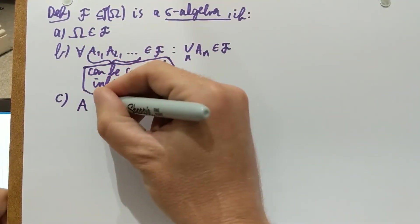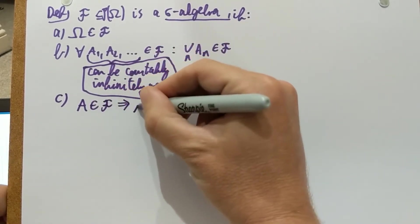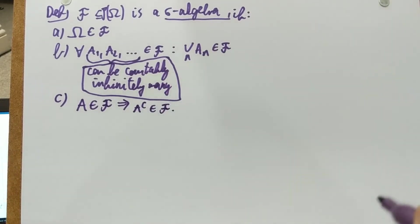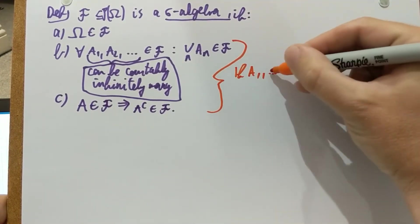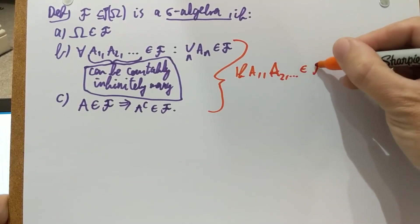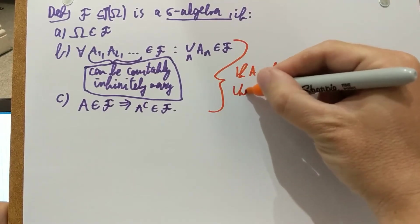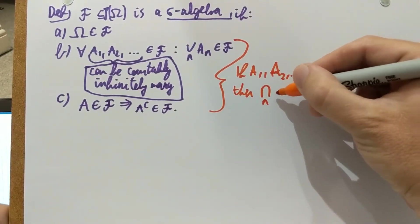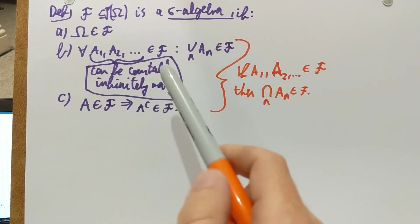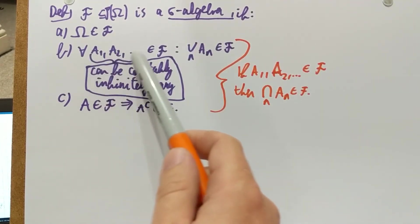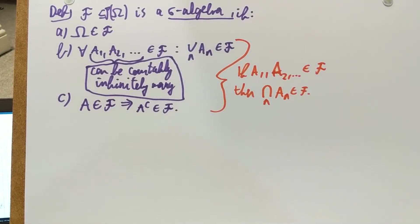That's part B, and that's what makes the difference from an algebra to a sigma algebra — we are now allowing an infinite sequence of events. Property C is the same as before: if A belongs to this family, then its complement also belongs to the family. And as before, it follows that if A1, A2, and so on belong to script F, then the infinite intersection also belongs to the family. So the main difference between an algebra and a sigma algebra is that here it could be either finitely many or infinitely many, and if they all belong to the sigma algebra, then the union also belongs to the sigma algebra.